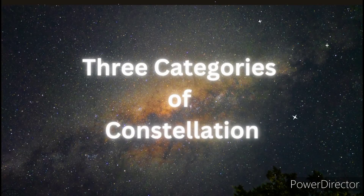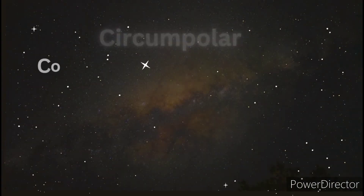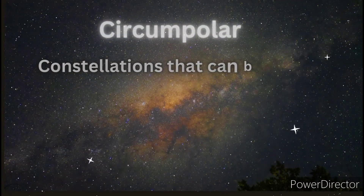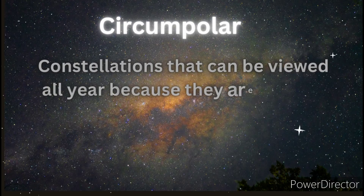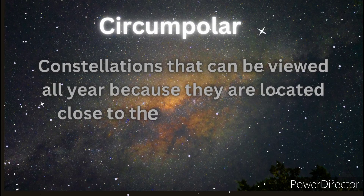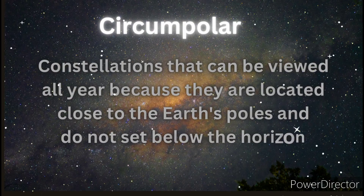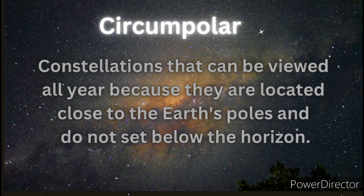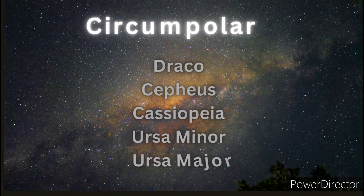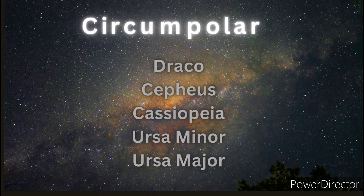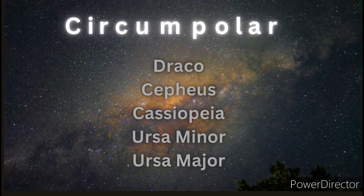There are three categories of constellations. The first is Circumpolar — constellations that can be viewed all year because they are located close to the Earth's poles and do not set below the horizon. These are: Draco, Cygnus, Cassiopeia, Ursa Minor, and Ursa Major.